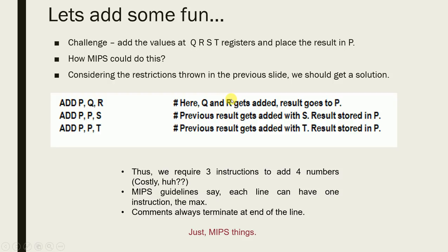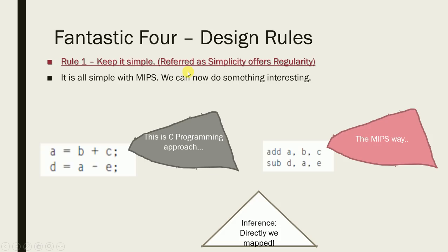It might appear costly, but it enhances hardware design and keeps it simple. Key guidelines: comments terminate at end of the line and start with a hash; you cannot have multiple instructions on the same line — only one instruction per line when writing MIPS code.